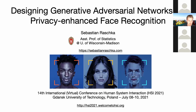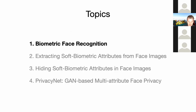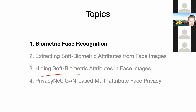Just to briefly recap, the four sections I'm going to cover today: biometric face recognition, extracting soft biometric attributes from face images, then hiding this soft biometric information, and our method for multi-attribute face privacy.